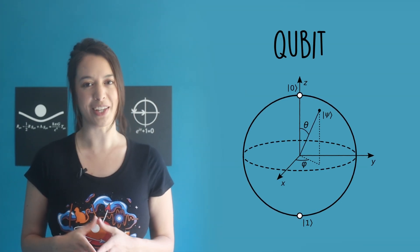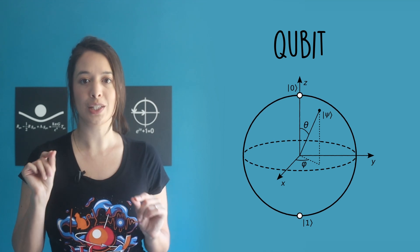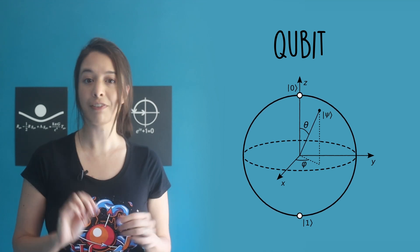Scientists represent qubits using a sphere with a vector inside it, a Bloch sphere. We can influence qubits with an external electric field.